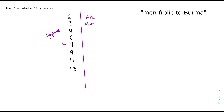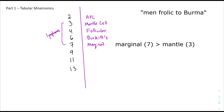For the next ones, the four lymphomas at numbers 3 through 7, we're going to use the sentence 'men frolic to Burma.' So 'men' for mantle cell lymphoma, 'frolic' for follicular, and 'Burma' is split up as 'Burr' for Burkitt's and 'ma' for marginal zone. If you get mixed up between whether 'ma' is for marginal or mantle, marginal is the longer word and should be paired with the larger number. Also, 'men' or 'man' has three letters, so it pairs with number three.